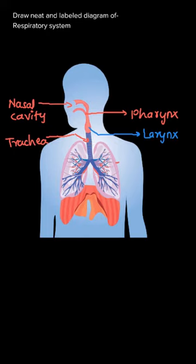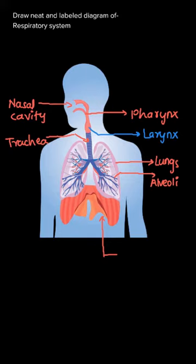Lung is the main respiratory organ of the body. Inside the lungs — we know that lungs are in pair, left lung and right lung — which are covering the maximum region of the thoracic cavity.